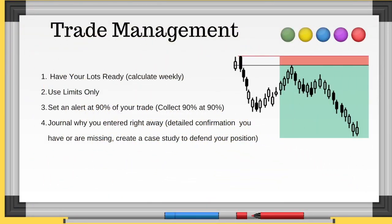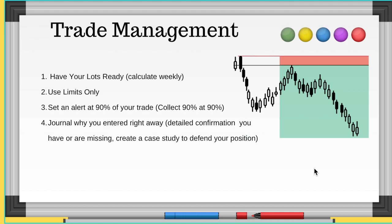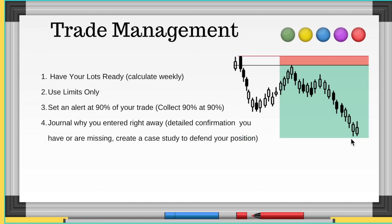Number three: set an alert at 90% of your trade and collect 90% at 90%. When you're in a trade, collect partials at 90% of the way to take profit. If I have a 1:10 setup, I'm collecting at roughly 1:9. I set an alert just before take profit to collect partials and move my stop. If you have a 1:10 setup and you collect partials at 1:3 or 1:4, you're ruining your risk-reward ratio and making it harder to stay in profit.